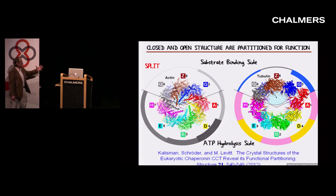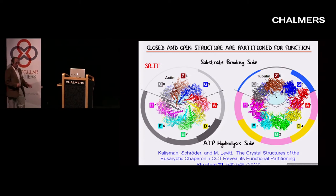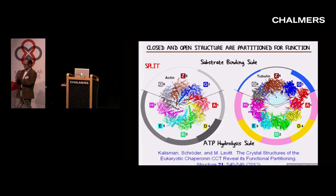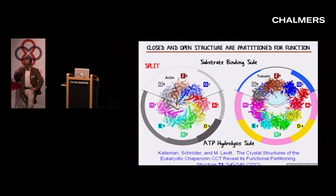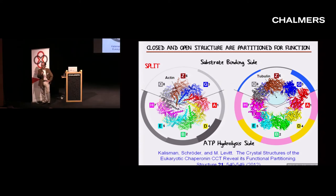The first thing we noticed is: if you align them, the substrate binds in exactly the same place whether it's open or closed. Then Amnon Hurwitz at the Weismann Institute had done mutational studies — there's a critical aspartic acid in the ATPase binding site and he knocked that out. He found that you could knock the aspartic acid out in the Q, Z, and G positions, but not in others.